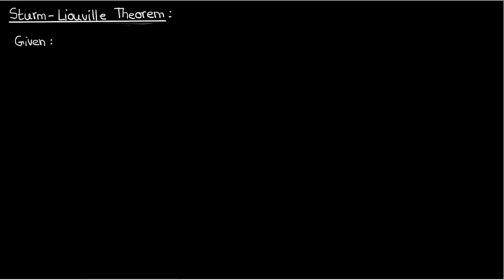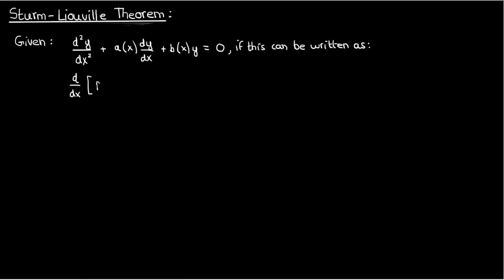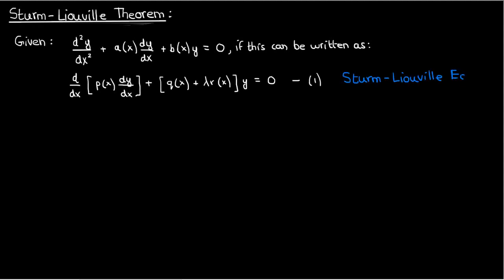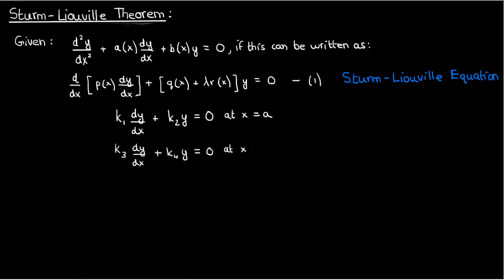Suppose I have a linear homogeneous differential equation given by d²y/dx² plus a(x) times dy/dx plus b(x) times y equals zero. If I can rewrite this differential equation in the form of the derivative of p(x) times dy/dx, plus q(x) plus lambda times r(x) times y equals zero, then it's called a Sturm-Liouville equation. The Sturm-Liouville theorem concerns this equation together with a couple of homogeneous boundary conditions at x equals a and x equals b. The combination of these is called the Sturm-Liouville problem.